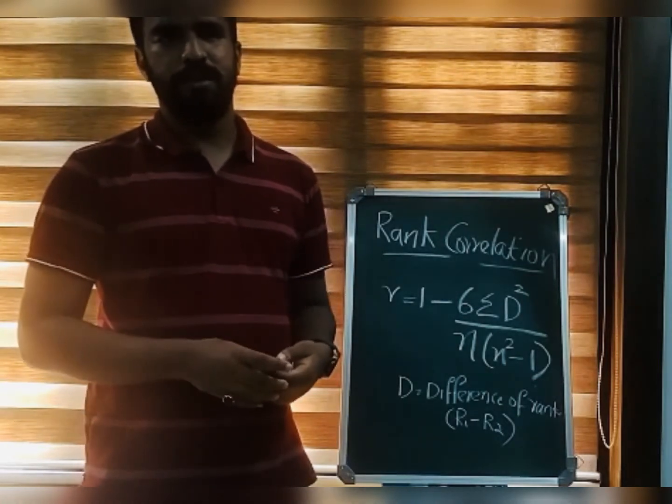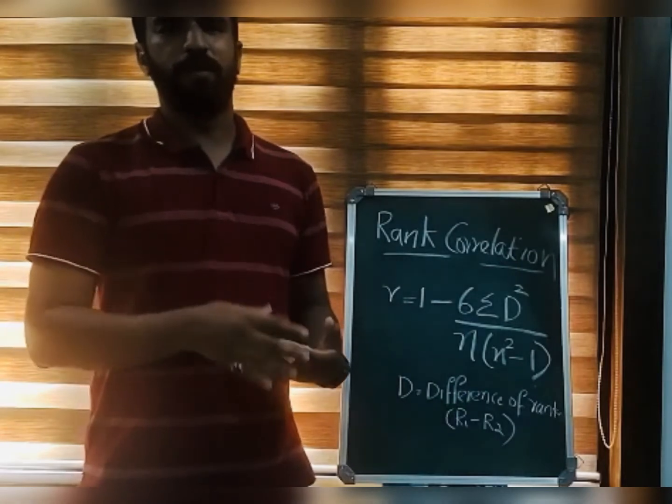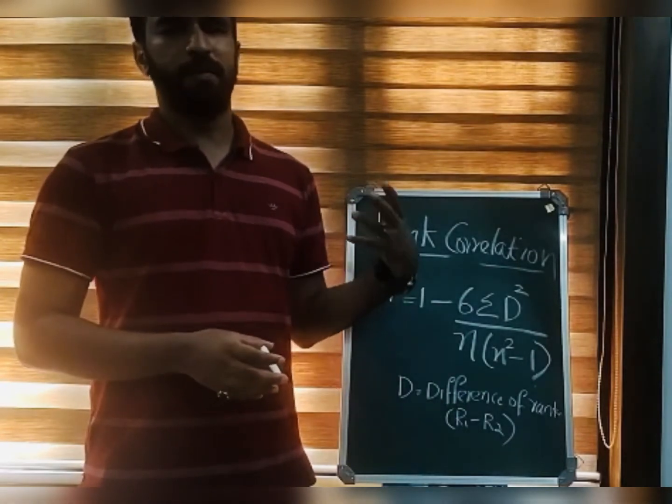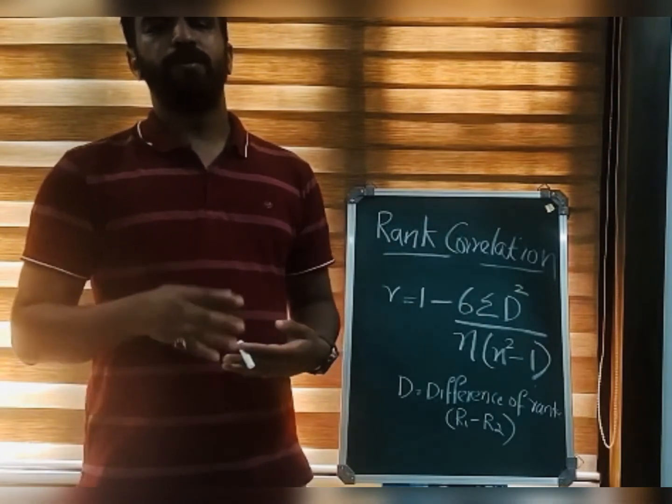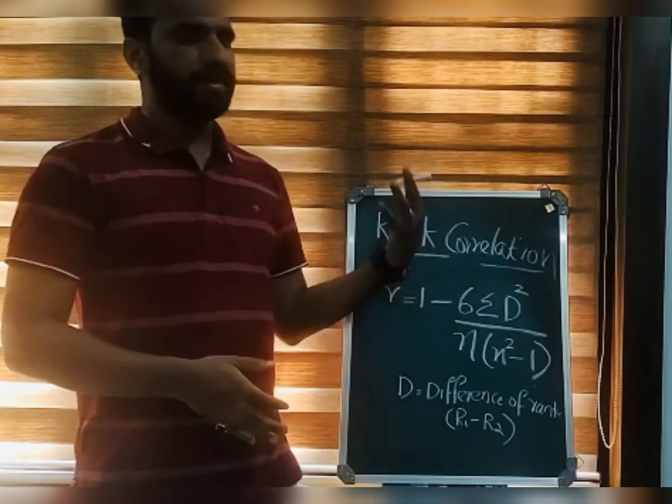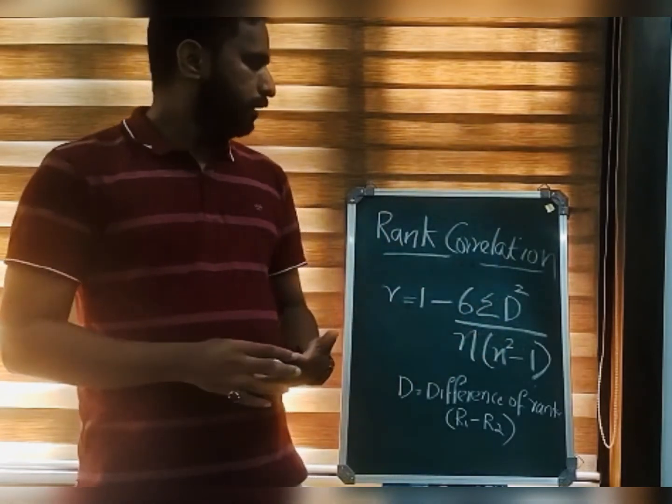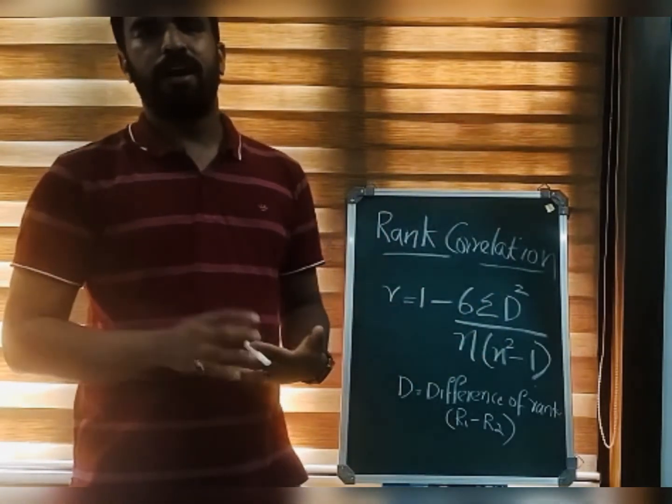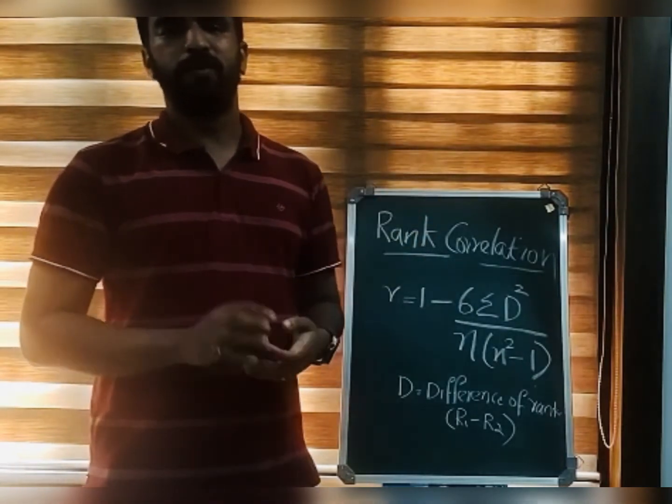So in case of qualitative variables, we cannot apply the method of Carl Pearson's coefficient of correlation. Instead of that, we are using this method that is rank correlation. So as an introduction, I must say rank correlation can be applied to those variables which cannot be expressed mathematically.